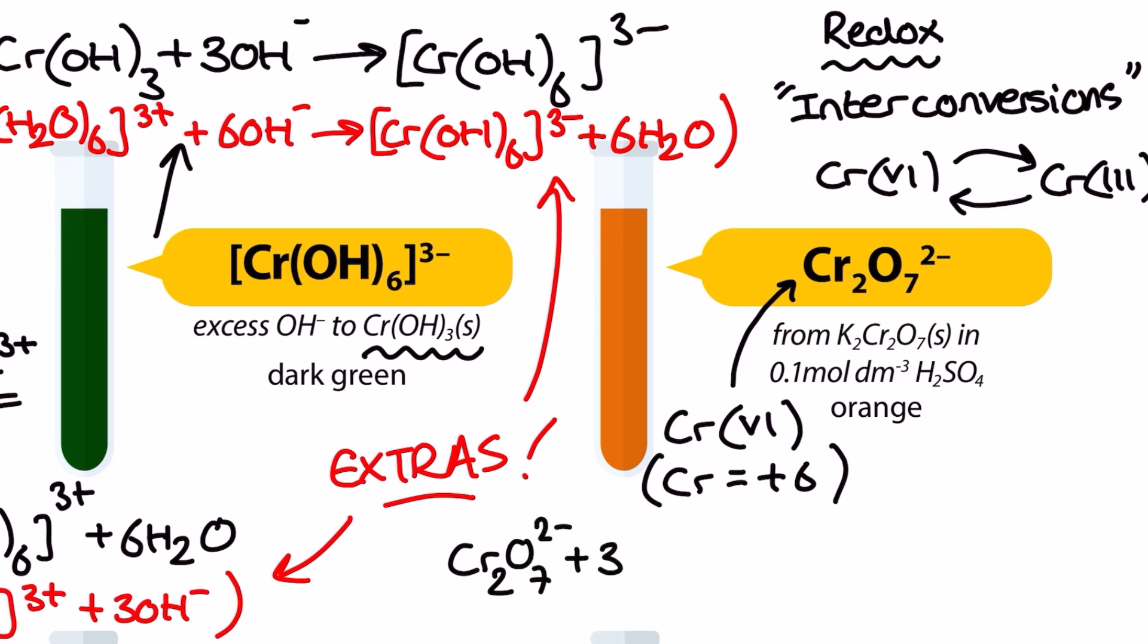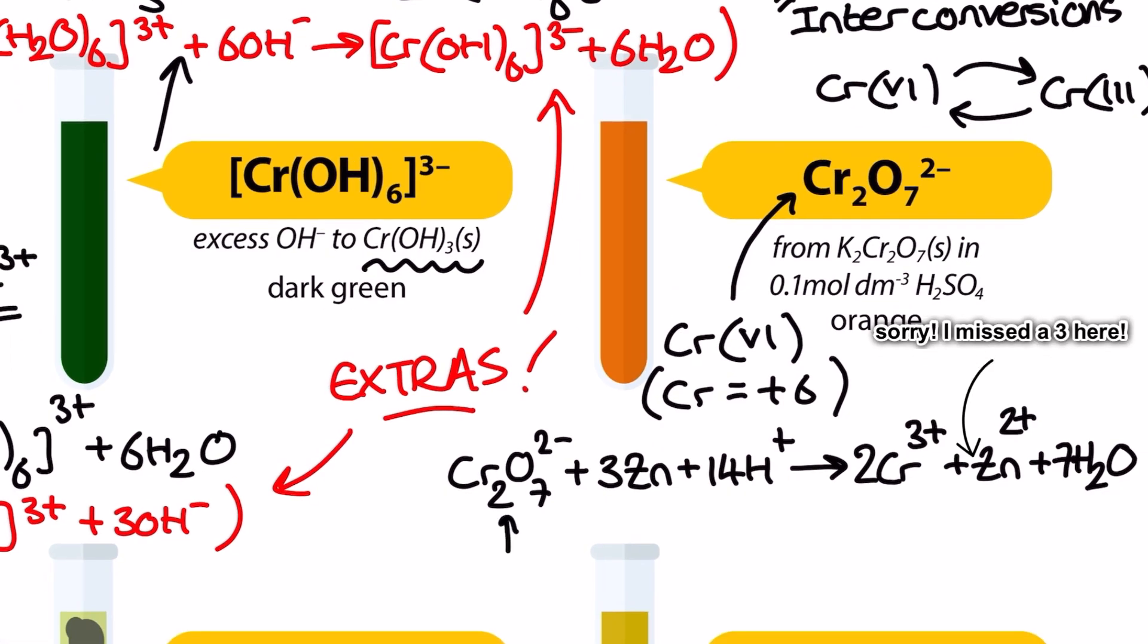You need to learn how we get this chromium reduced to a plus 3 oxidation number and we are able to write that as a Cr3 plus ion. My advice is to use zinc and acid following the reaction equation that you can see on screen. This is a redox reaction so it can be constructed using half equations in acidic conditions. And remember the chromium here is being reduced from plus 6 to plus 3.